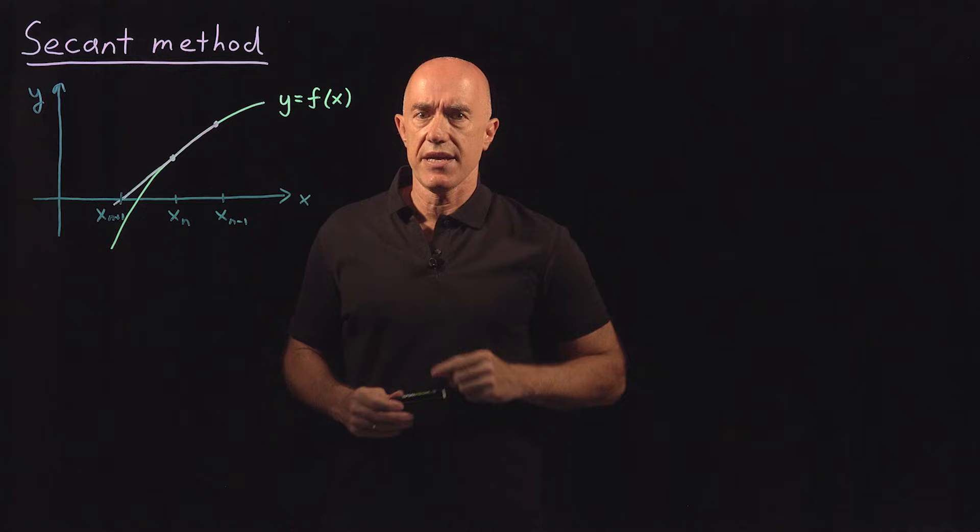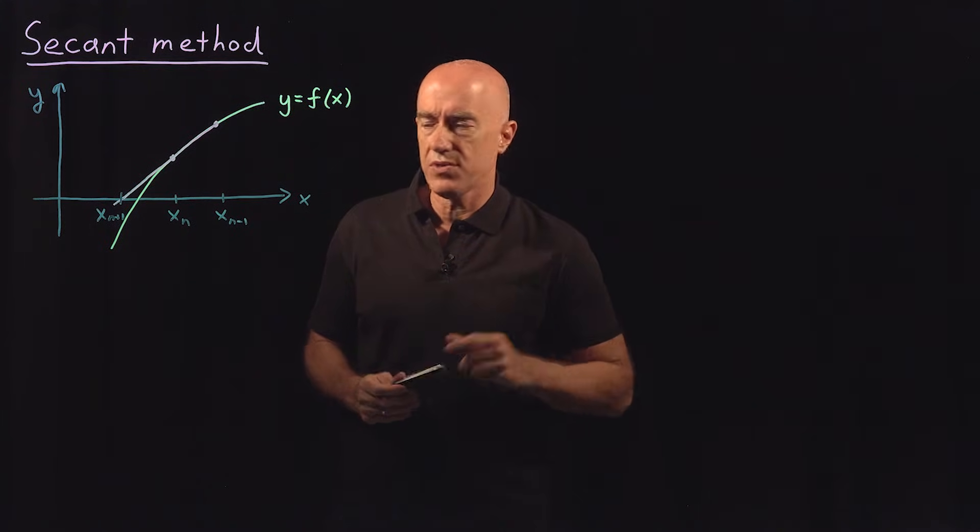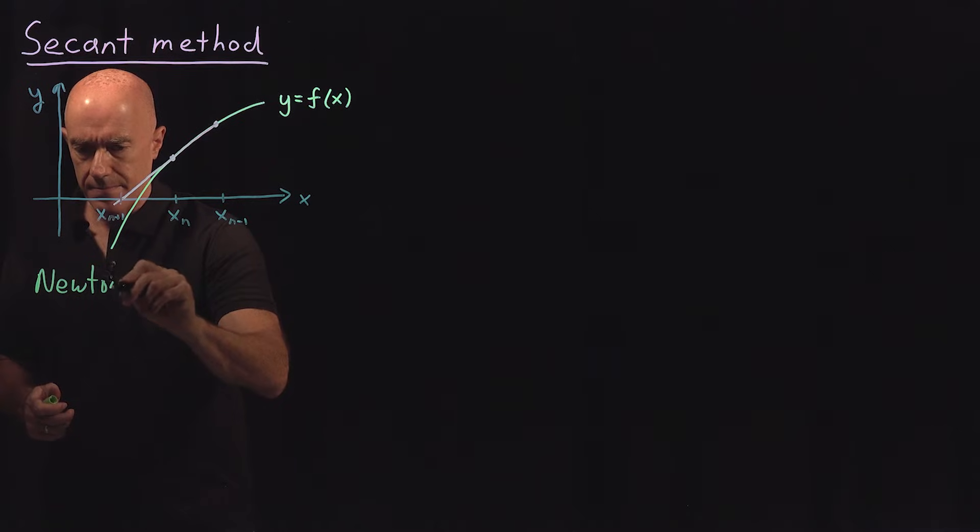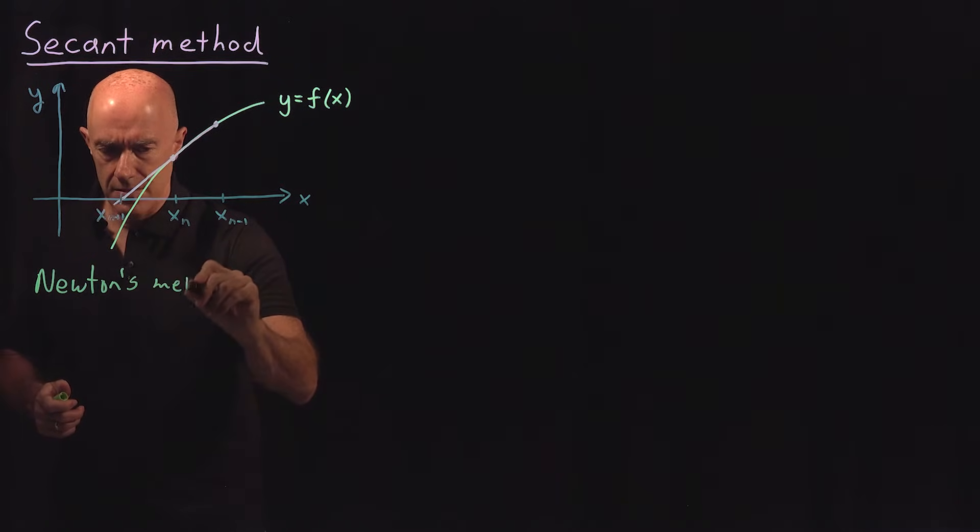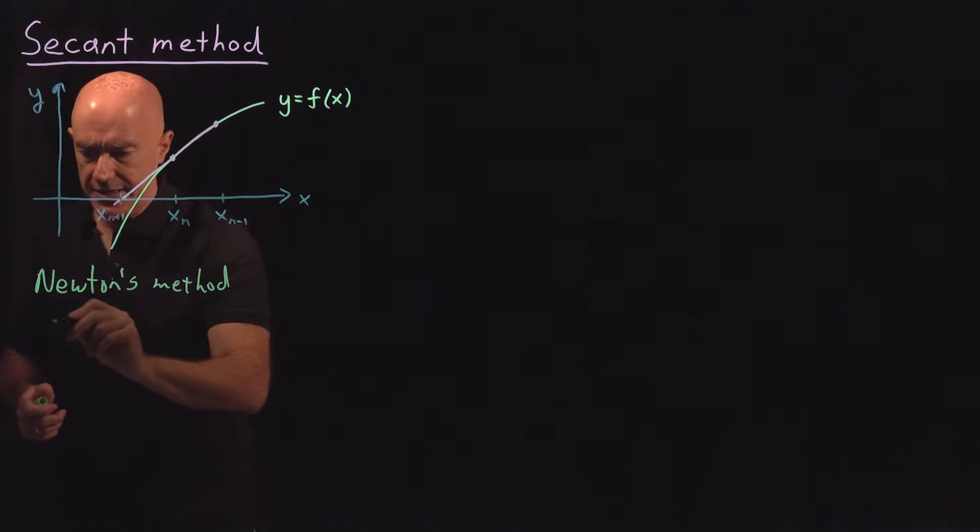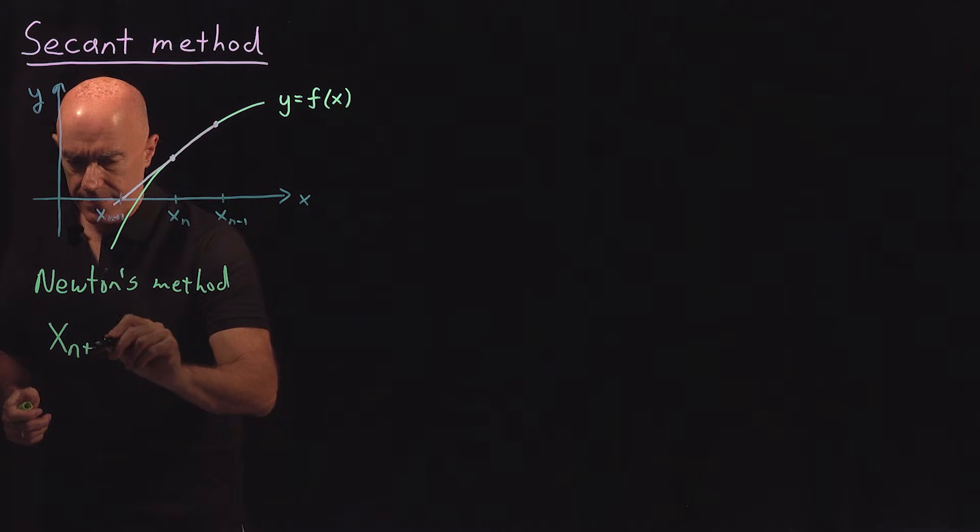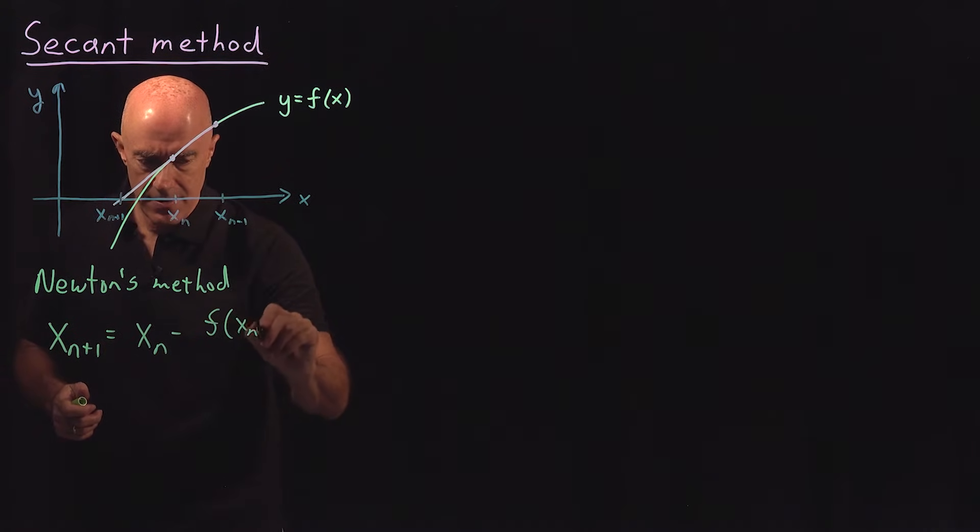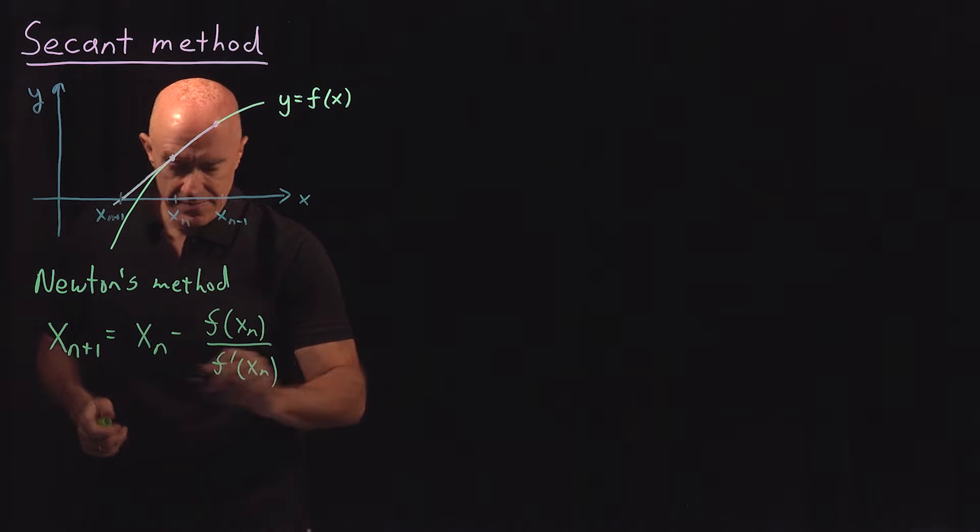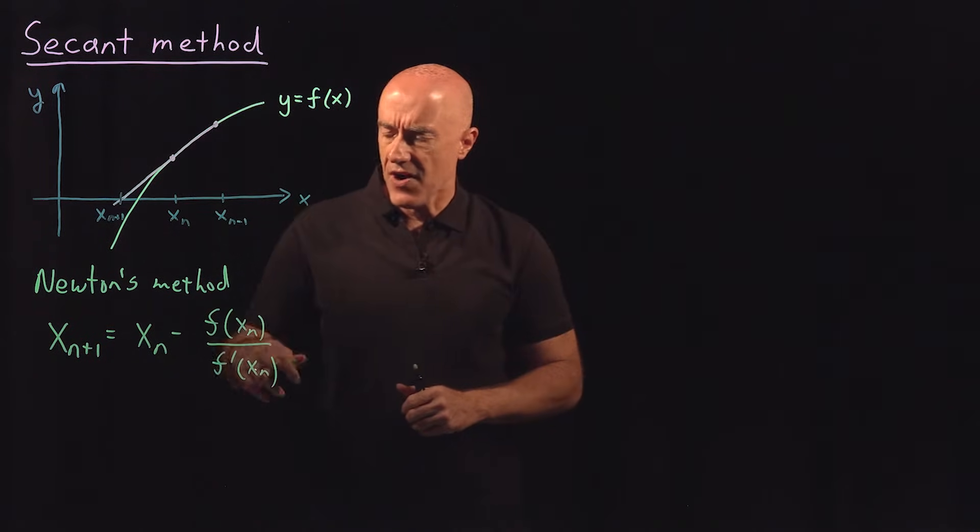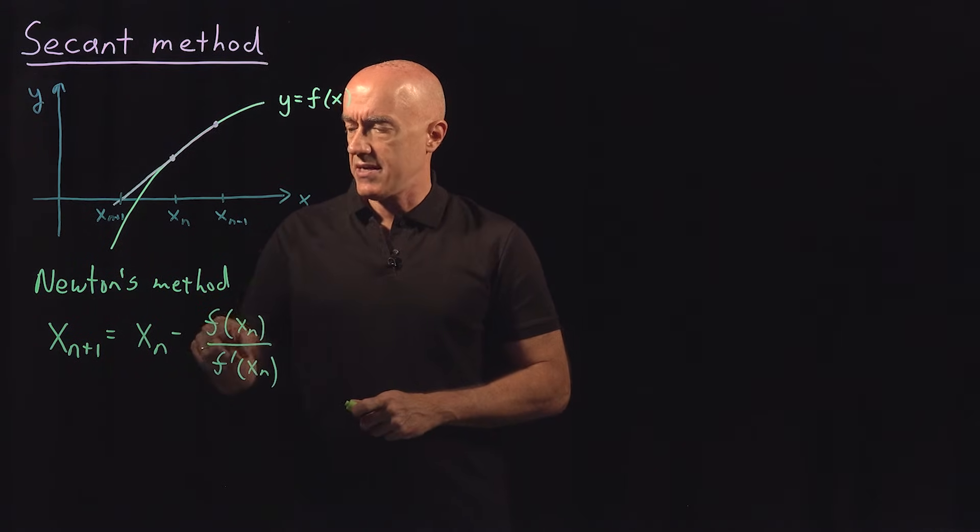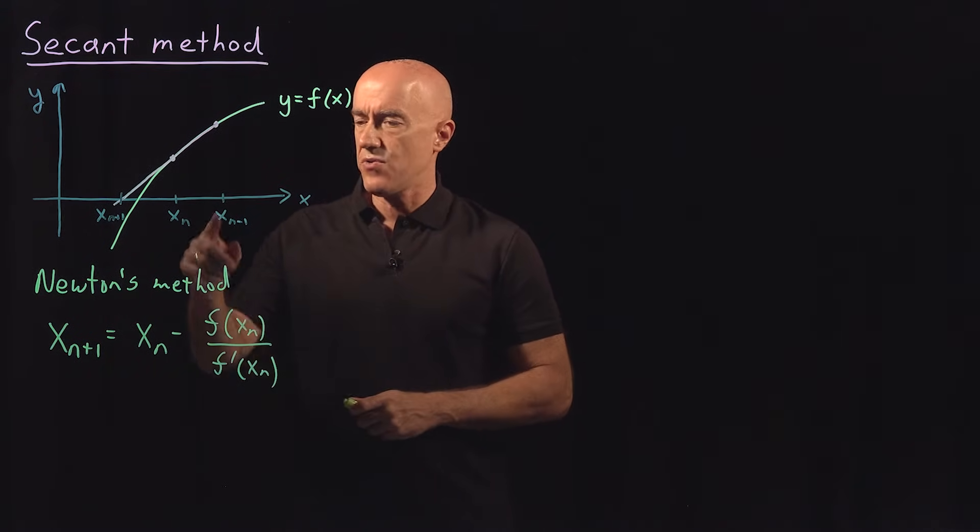So to derive secant's method, let's start with Newton's method. Newton's method is x_(n+1) = x_n - f(x_n)/f'(x_n). If you can't find f'(x_n) analytically, then what you can do is add an additional point to your iteration.